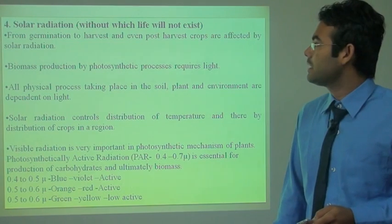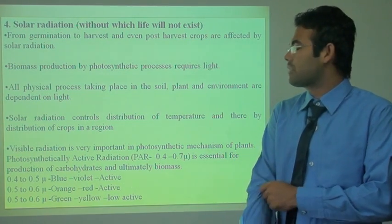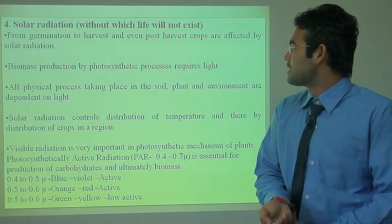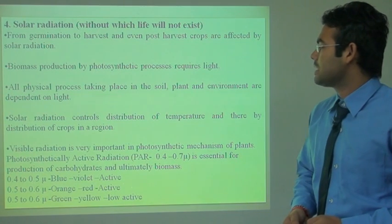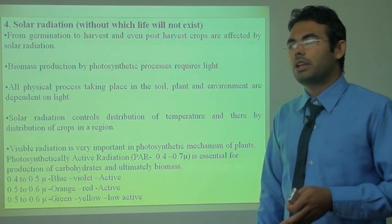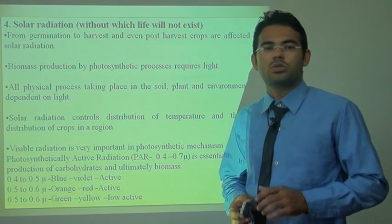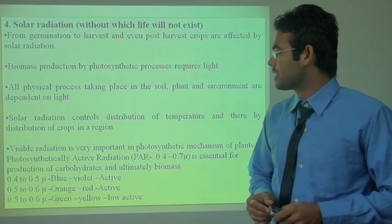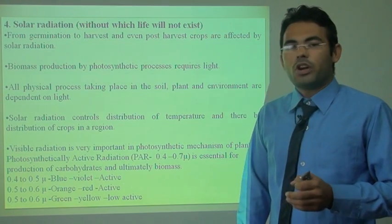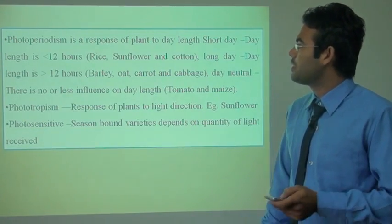The fourth climatic factor is solar radiation. From germination to harvest and even post-harvest technology are affected by solar radiation. Biomass production by photosynthesis requires light. All physical processes taking place in soil, plant and environment depend on light. Solar radiation also controls temperature and the distribution of crops in a region. Photosynthetically active radiation (PAR) is 0.42 to 0.7 micrometers, essential for the production of carbohydrates and ultimately biomass.